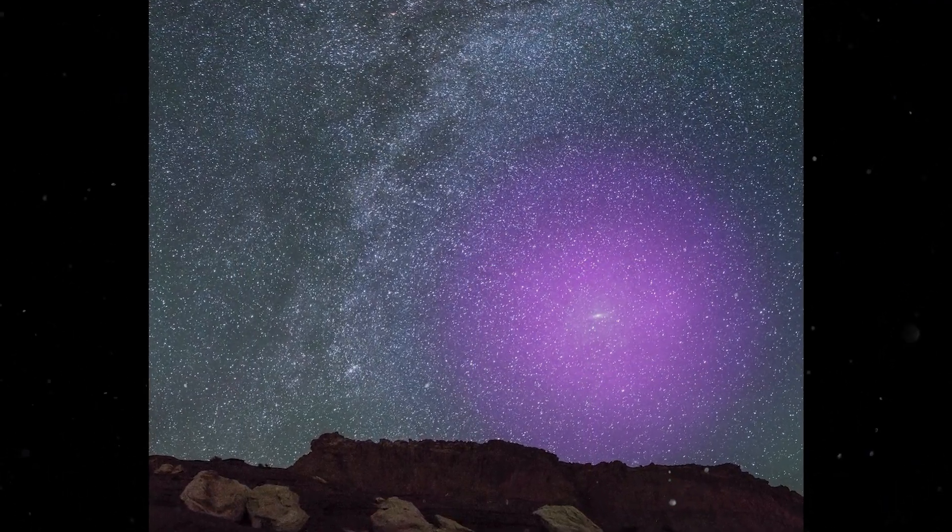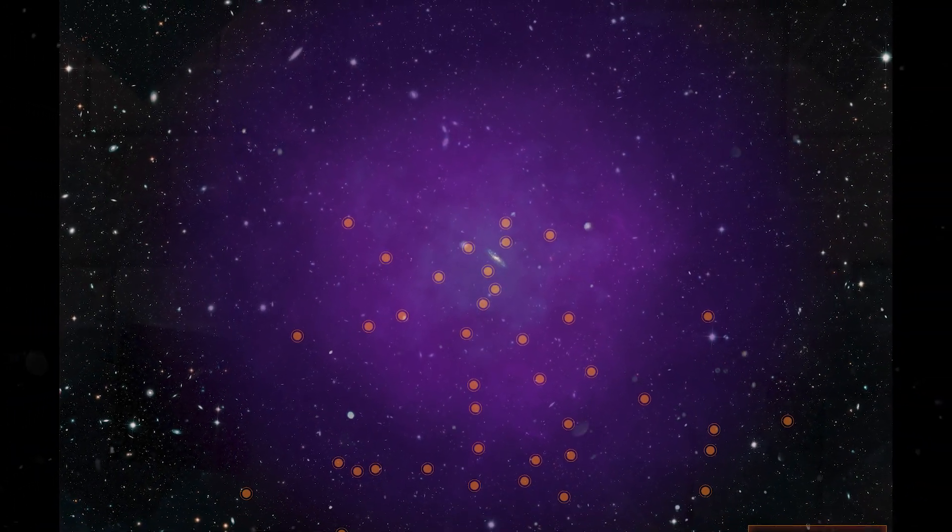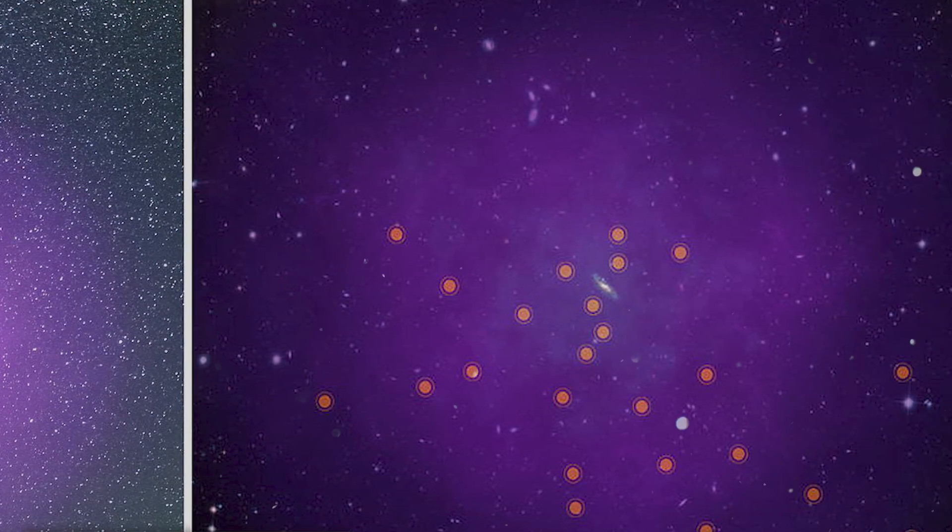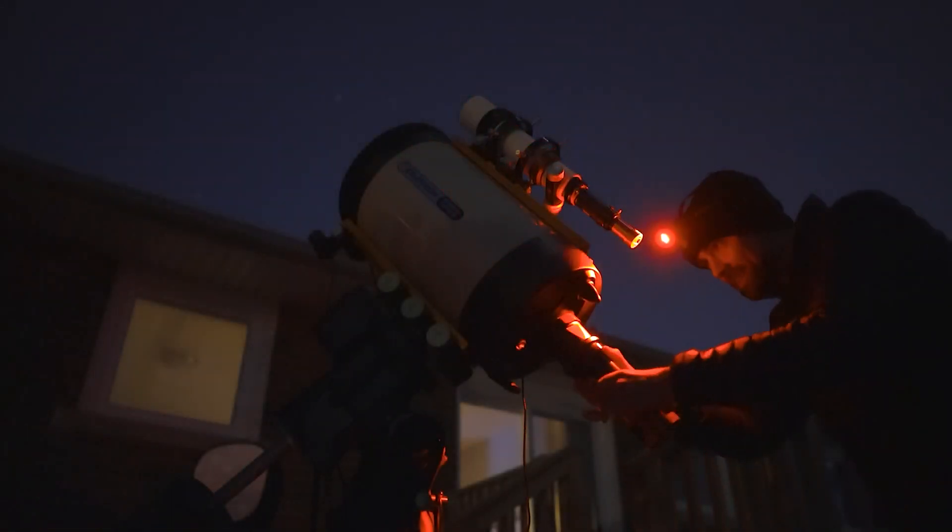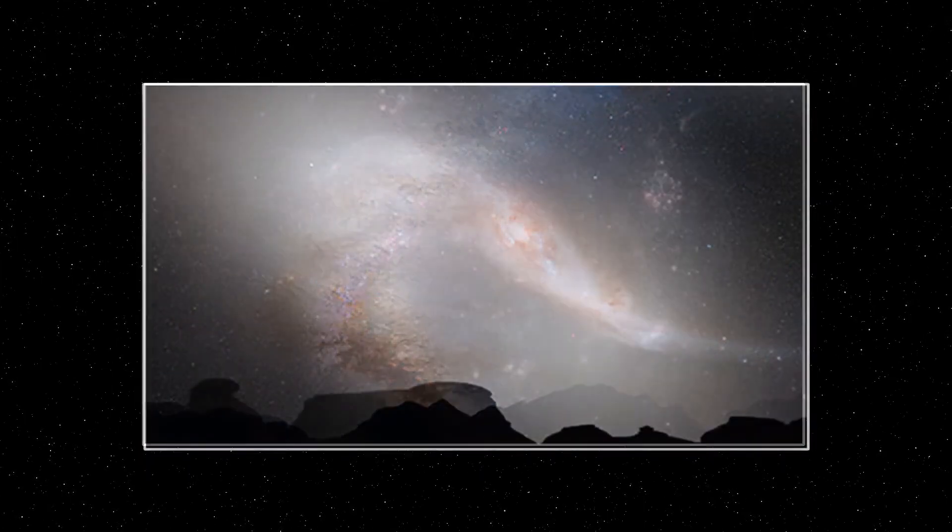It could be part of the Andromeda galaxy's halo, which is a large collection of stars that surround the main body. It could also be gas that was flung off by the stars that make up the halo. But if this is the case, then astronomers should have seen more hydrogen in the cloud since it's a major component of stars.